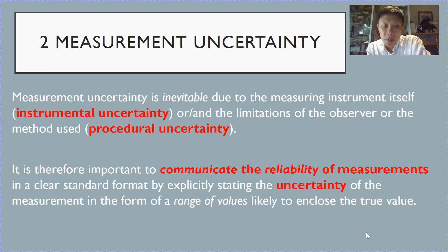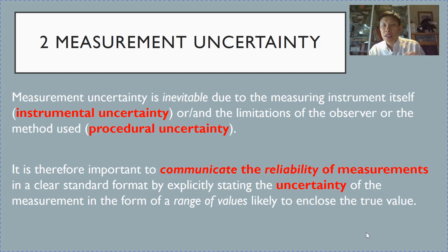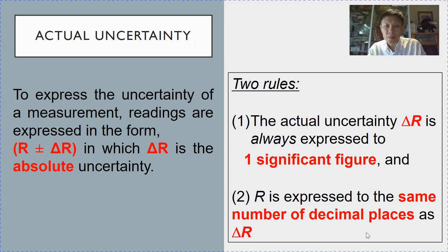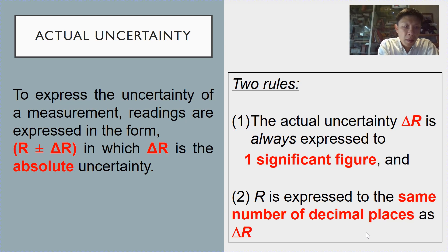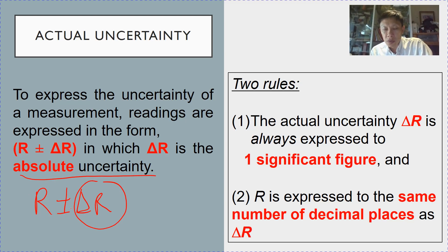From the previous video, due to instrumental uncertainty and procedural uncertainty, there will always be uncertainty in a measurement. Because of this, it is important for us to express the reliability of the measurement. We do this by stating the uncertainty in the form of a range of values, expressing the reading r as r ± Δr, where Δr is called the absolute uncertainty.